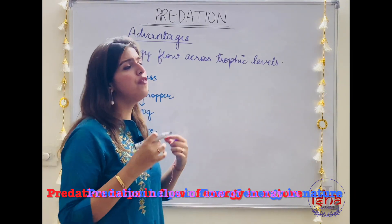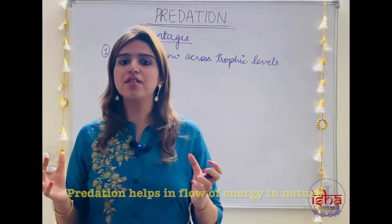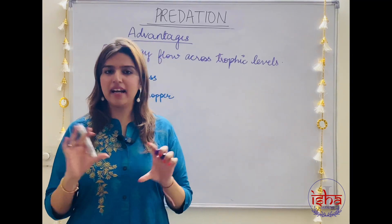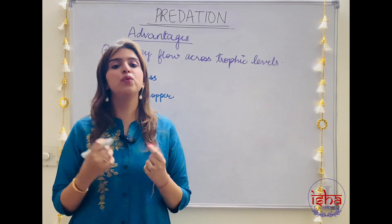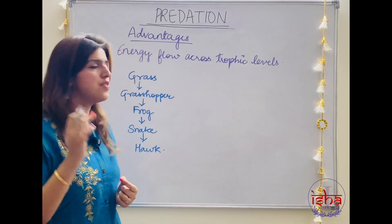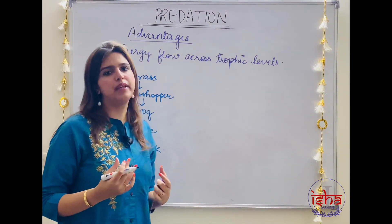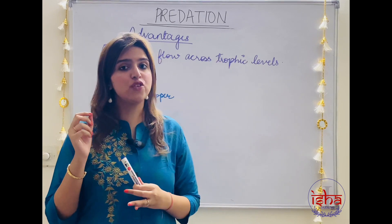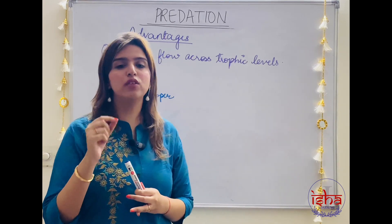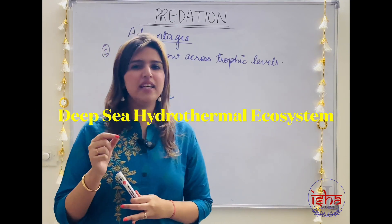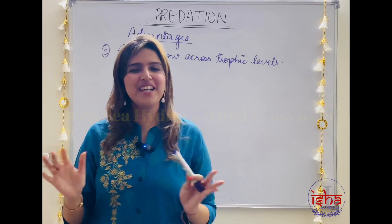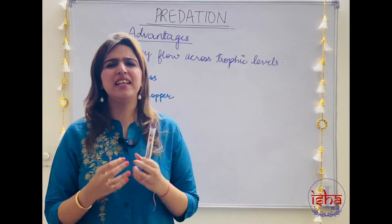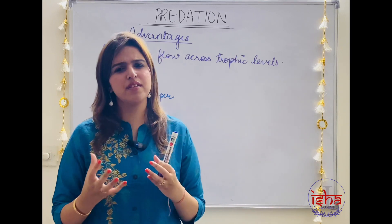Predation helps in the flow of energy in nature. In an ecosystem — where an organism interacts with both living organisms and its environment — energy flow is happening. Every ecosystem gets its energy from sunlight. An interesting exception is the deep-sea hydrothermal vents, which do not get energy from sunlight. But besides that, all ecosystems derive their energy from sunlight. Through photosynthesis, inorganic compounds like carbon dioxide and water are converted in the presence of sunlight, and plants synthesize organic molecules like sugars.